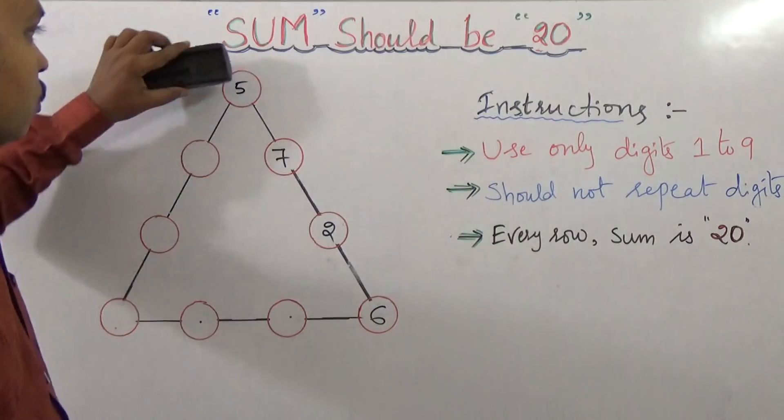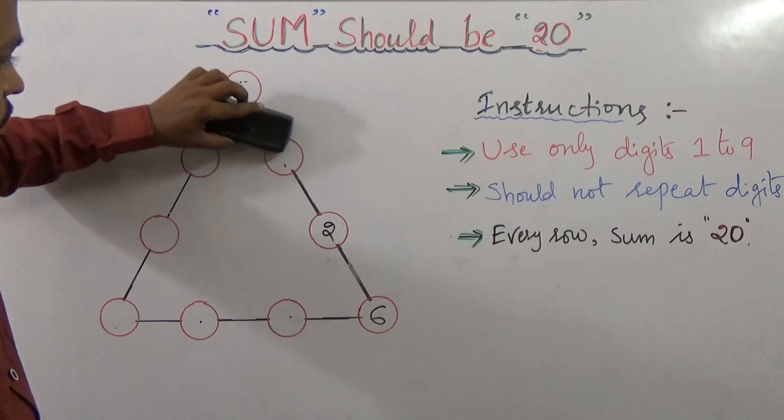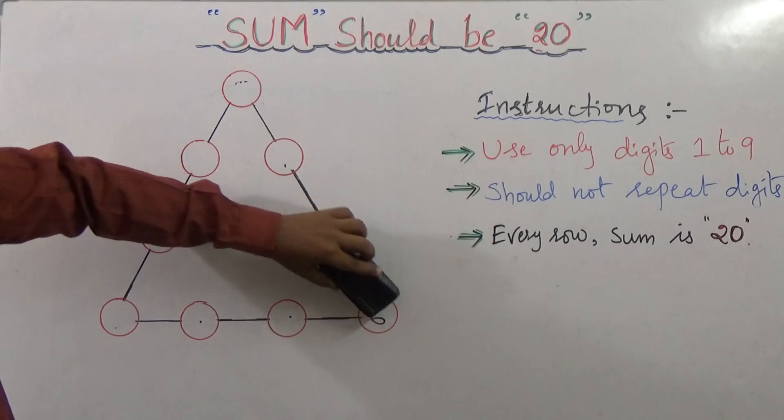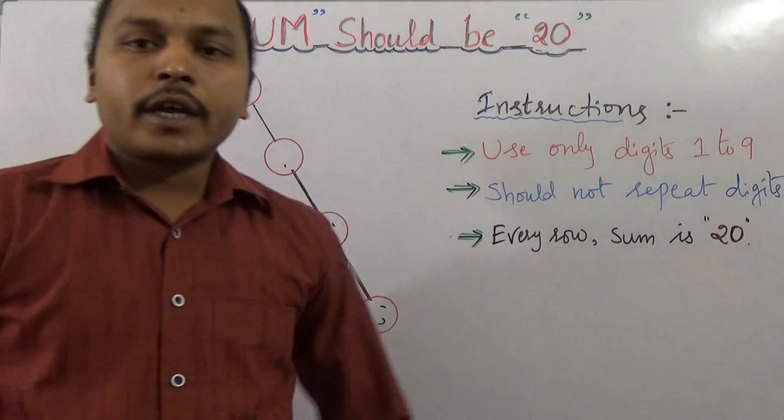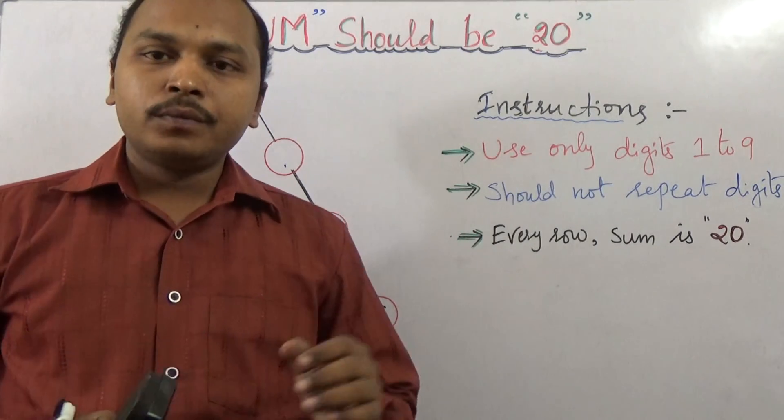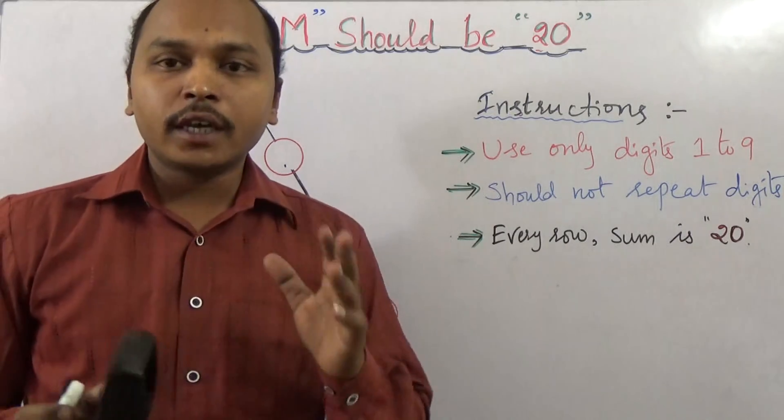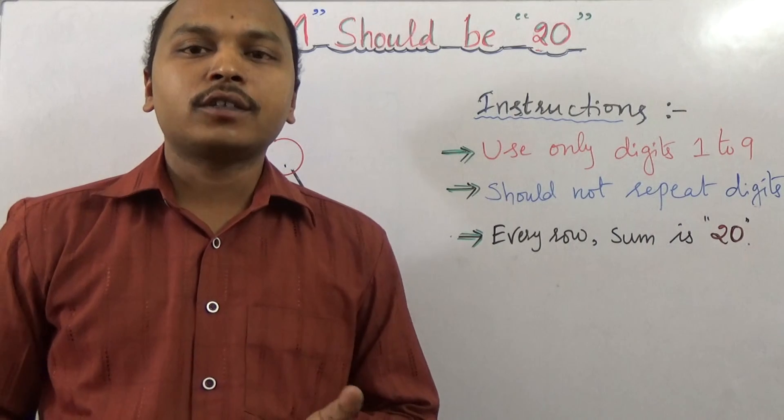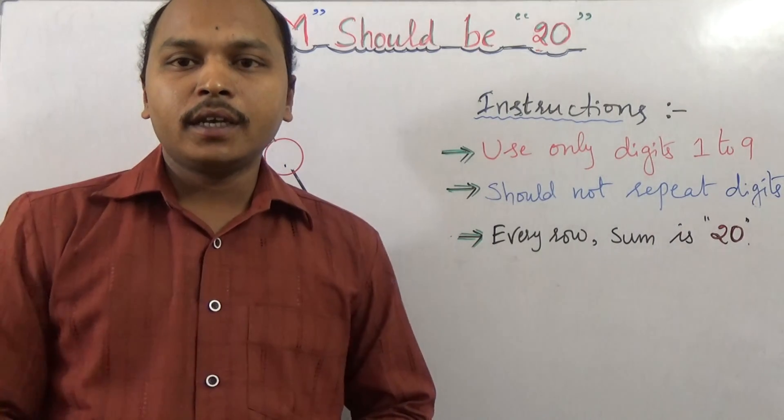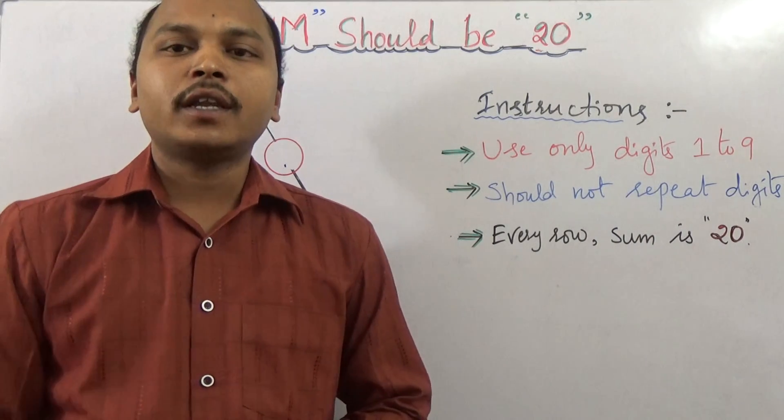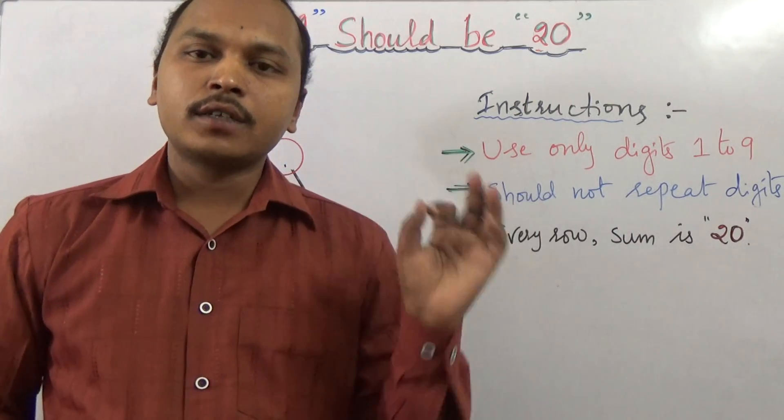This is only an example for you, so don't take this as the answer. Just try with your own numbers, and every row the sum should be 20. So try this puzzle. In case you did not find the solution, don't worry. There's a link in the description below. Click on the link and you'll be redirected to the website where you can see the solution directly.